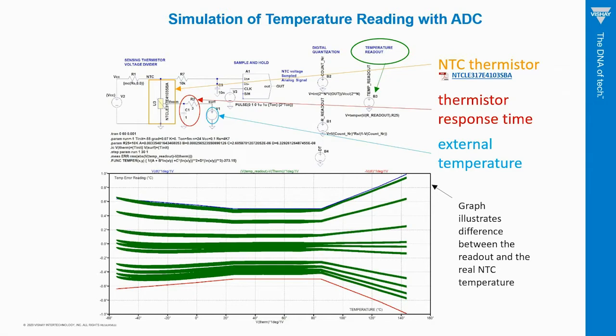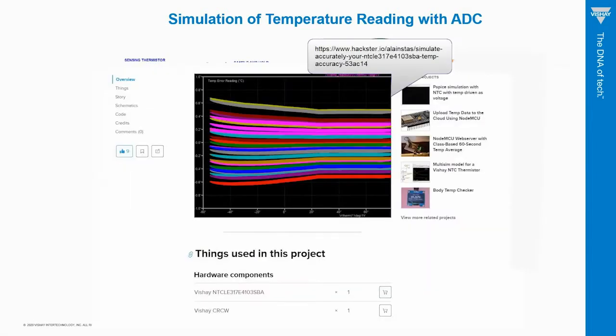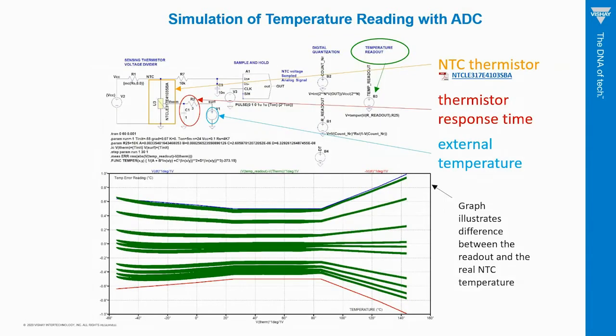The functional model that you see now is the one of the NTCLE 317 microchip component. This simulation is available for download on the website of Hackster, on which I will come back at the end of the video. The NTCLE 317 thermistor is exposed to a variation of external temperature.